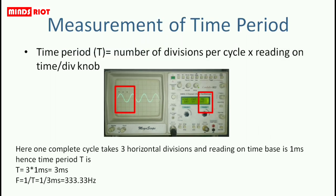Measurement of time period. To calculate time period, you need horizontal divisions covered by one complete cycle and the reading on the time per division knob. Here, the calculation gives T equals 3 milliseconds and frequency equals 333 hertz.